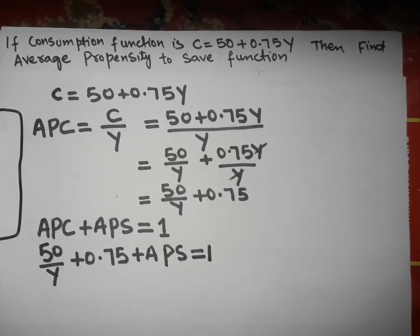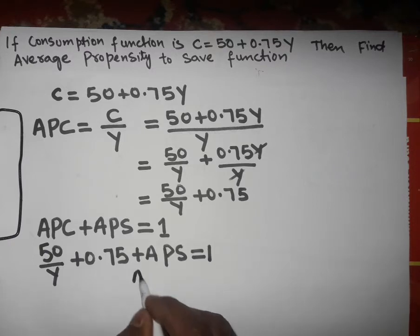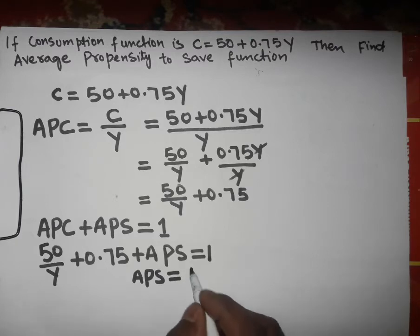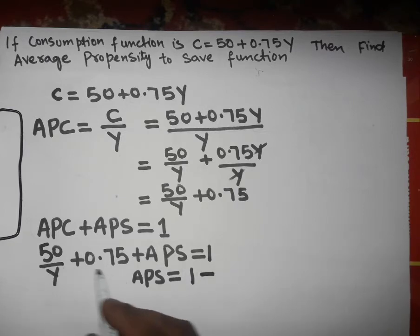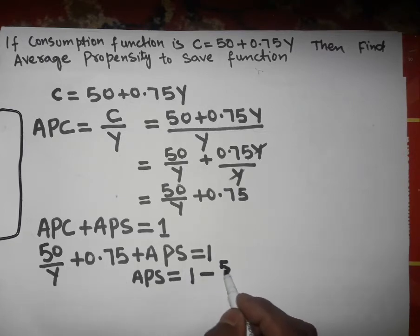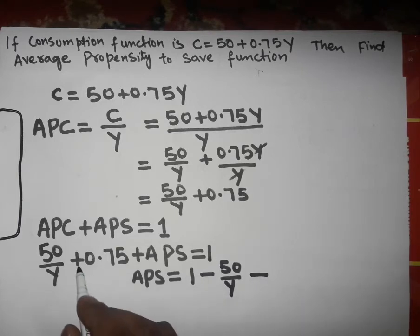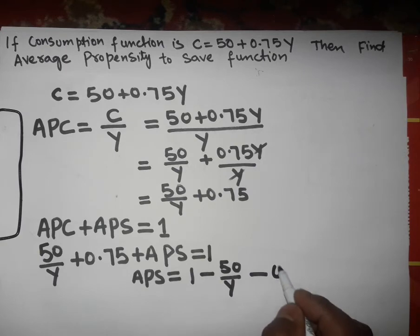Now, solving for APS, we get APS equals 1. Transposing these two terms to the right hand side, this becomes APS equals 1 minus 50 over Y minus 0.75.